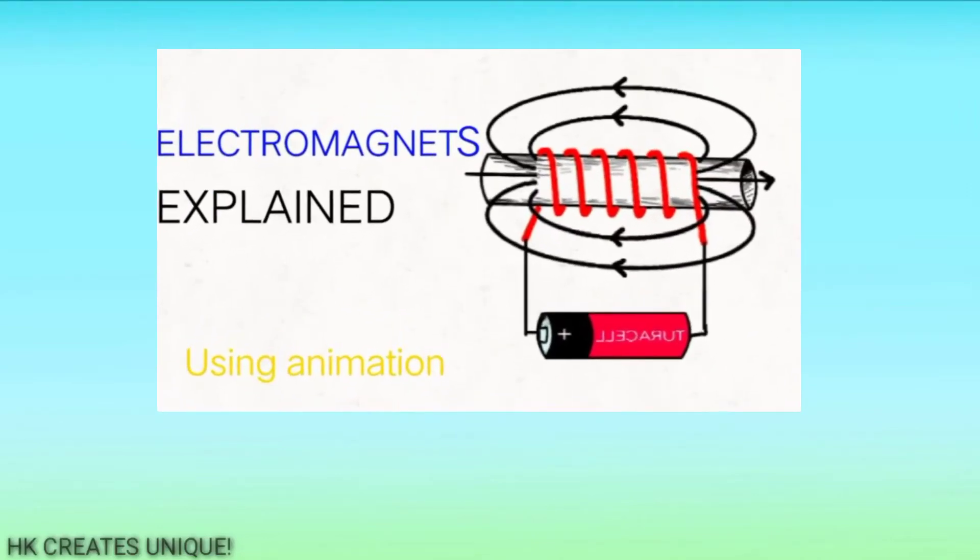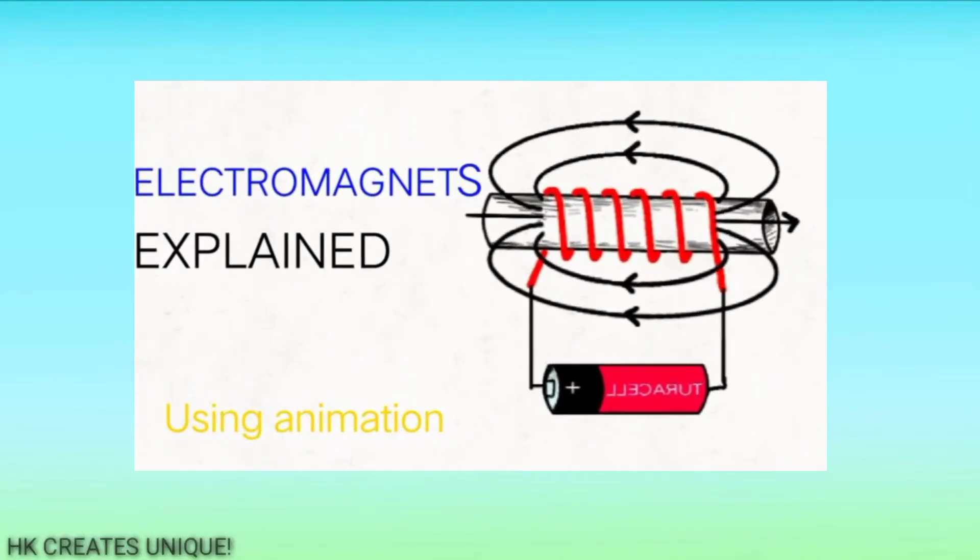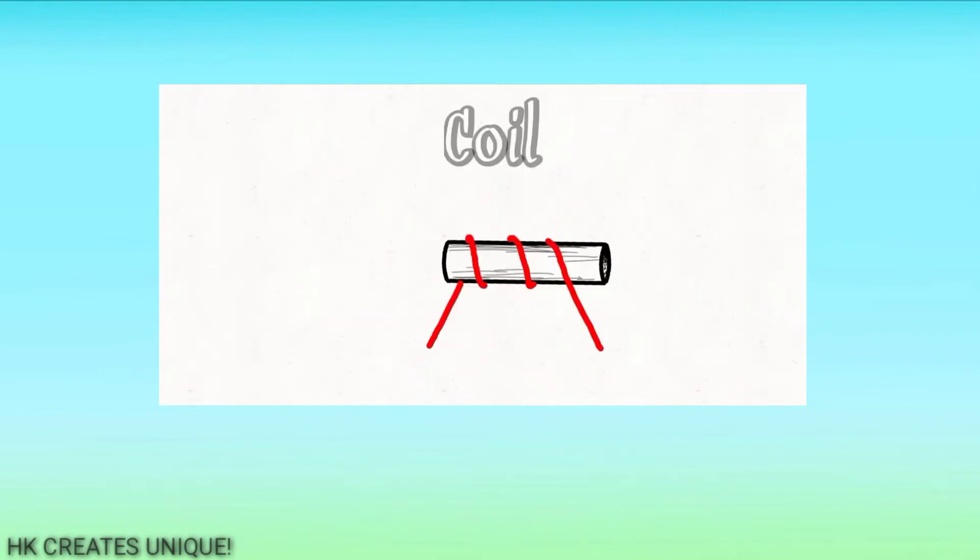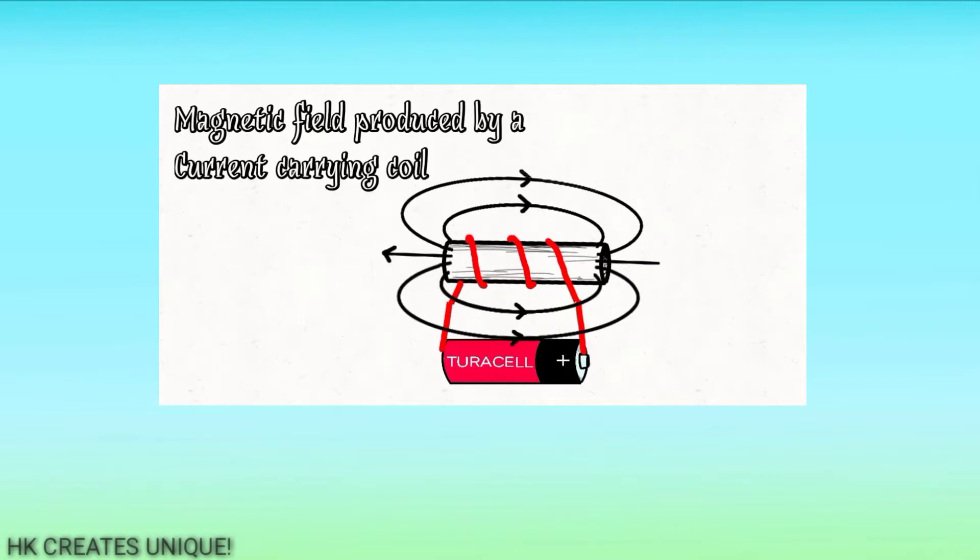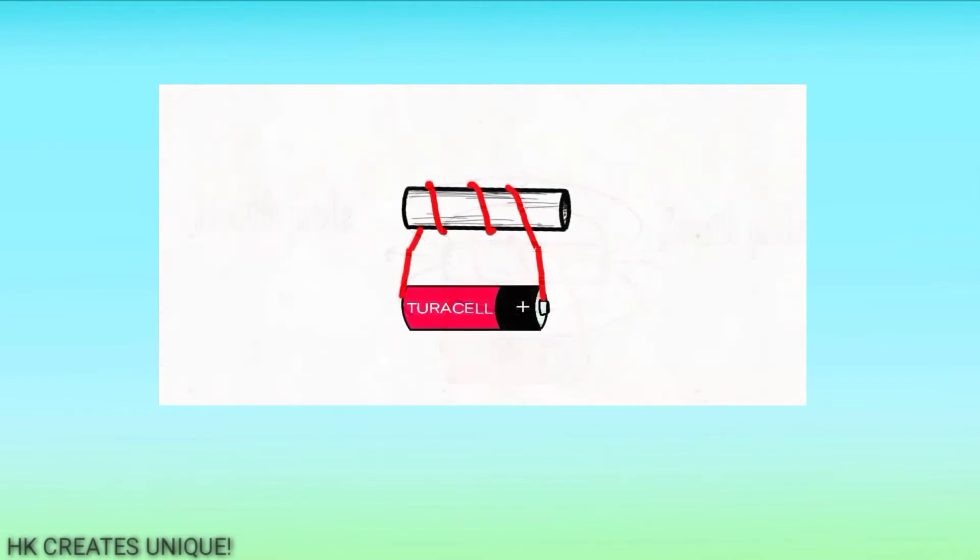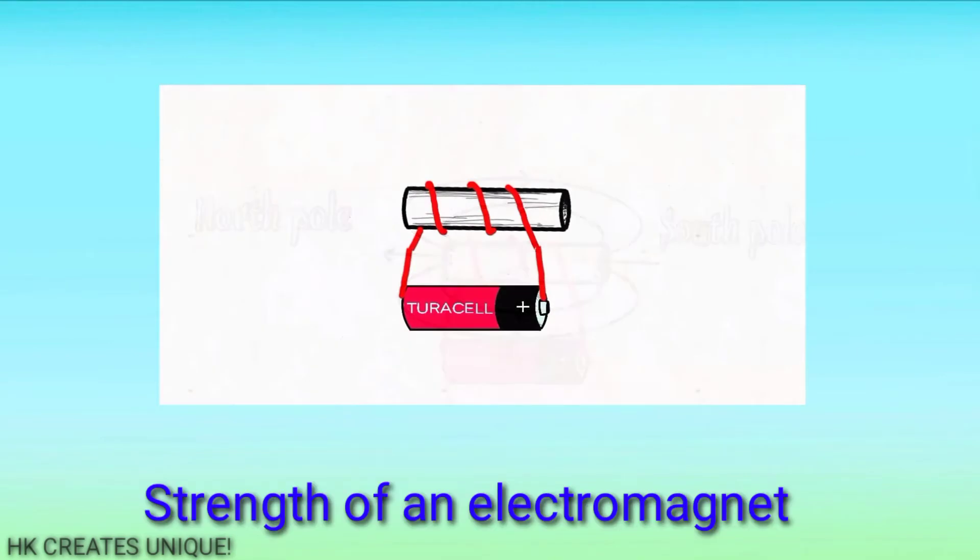In the electromagnets explained video, I told you that an electromagnet's strength can be increased by coiling magnet wires around a cylindrical object. But can the electromagnet's strength be increased further? In this video, I will show the factors that affect the strength of an electromagnet. Let's get started.